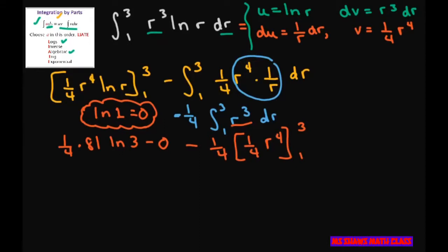Now let's clean this part up. This is 81 divided by 4 ln 3. For this part, I'm going to pull this one-fourth out, so that's minus 1 sixteenth.